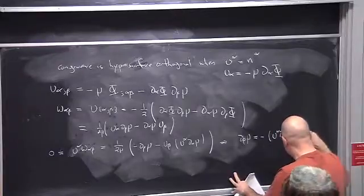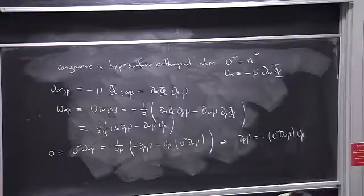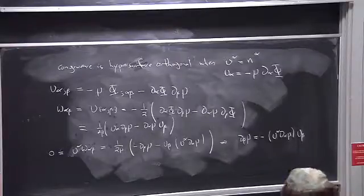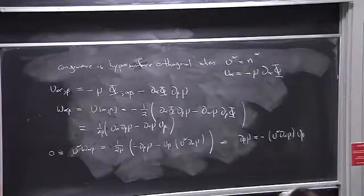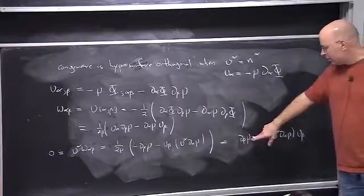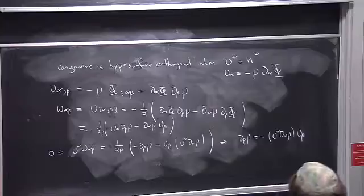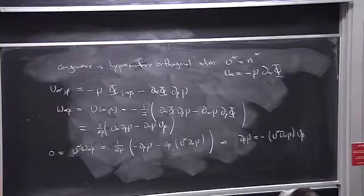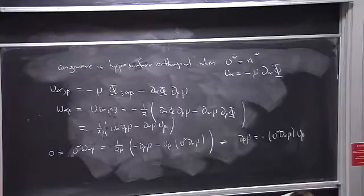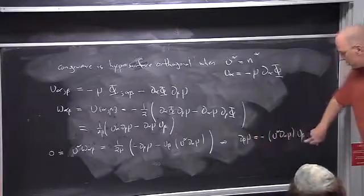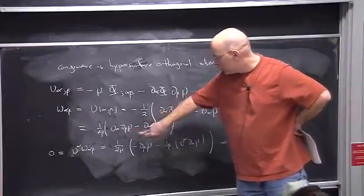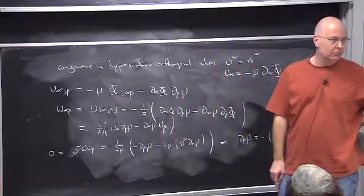For all of this to be consistent, we can allow μ to vary but it can only vary in the direction of the normal, or in the direction of the velocity field u. And if that's true, we find that all components of omega actually have to vanish — because if grad μ has to be proportional to u, then the two terms in omega are identical and they cancel out.